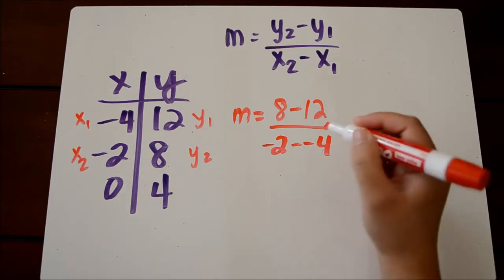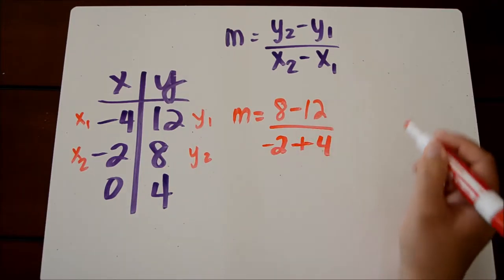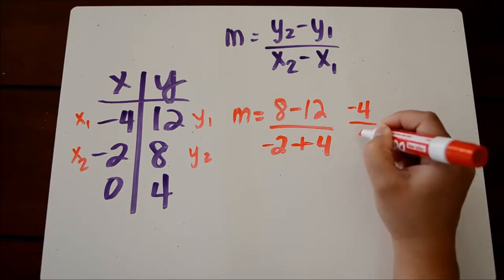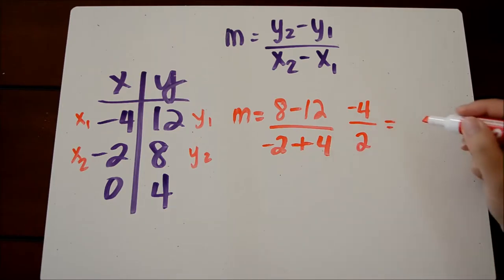So 8 minus 12 is negative 4 over negative 2 plus 4 is 2. And this can be reduced to negative 2.